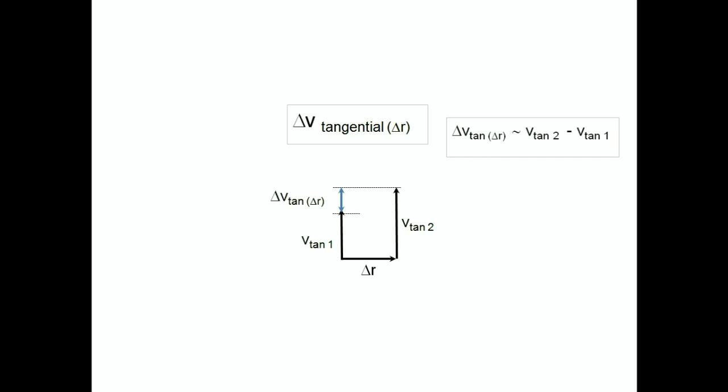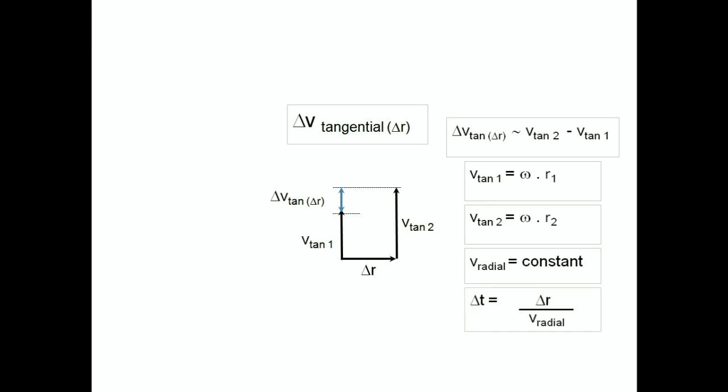The length of the tangential velocity vector at point 1 is given by ω × r1. Similarly, at point 2, the tangential velocity vector will be ω × r2. The slider moves a distance from r1 to r2, which we call delta r. It does so with a constant radial velocity, v sub-radial. Using these, we can find delta t. We now have all the information we need to obtain the acceleration.